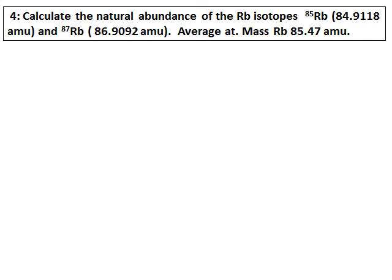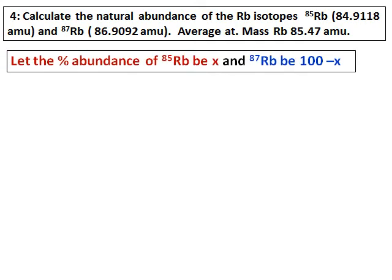Calculate the natural abundance of the rubidium isotopes. The mass and the average atomic mass of rubidium are given. This is a different kind of question where you are asked to calculate the percentage abundance. To do so, assume that the percentage abundance of rubidium-85 is x. Since the total percentage abundance must equal 100, the other isotope's percentage abundance will be 100 minus x.